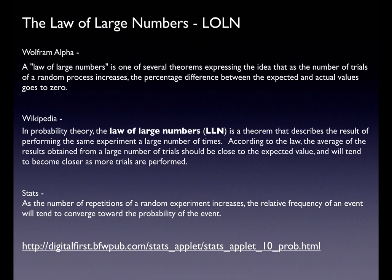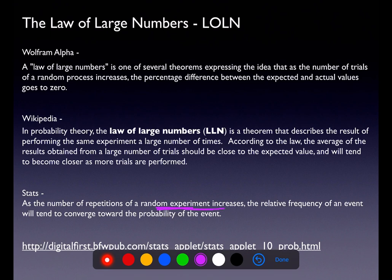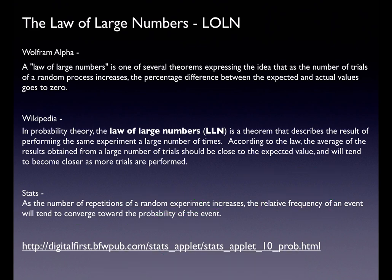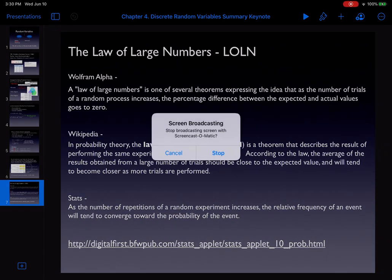The last concept in this chapter is the Law of Large Numbers. As the number of repetitions of a random experiment increases, the relative frequency of an event — what you actually observe — converges to the true probability of the event. For example, flipping a fair coin: initially you might see heads 70% of the time, but in the long run the proportion of heads will even out to 50%. That wraps up Chapter 4!